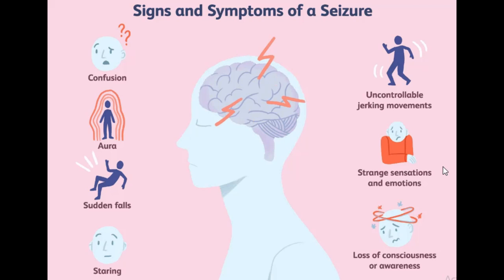If you have recurrent seizures, it's basically called epilepsy. Seizures can be caused by brain injuries such as trauma, stroke, brain infection, or a brain tumor. Other causes include high fever, high or low blood sugar, alcohol or drug withdrawal, or a brain concussion.